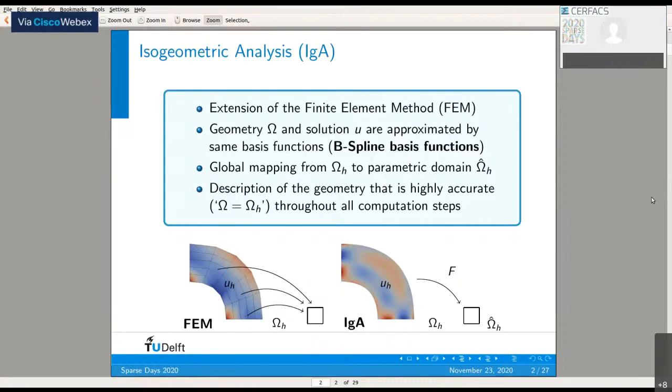To approximate both the solution and geometry in this variational form, we adopt B-spline basis functions. These basis functions are defined on a parametric domain, omega-hat. Then a global mapping is constructed from our geometry of interest, omega-h, to this parametric domain where the B-splines are defined. Since we're using these flexible B-splines, we obtain a description of the geometry which is highly accurate throughout all computational steps.